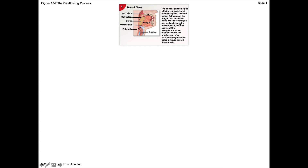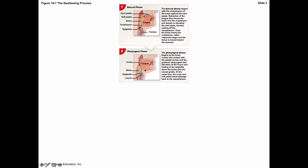At this point, the epiglottis is still elevated and the trachea is still open for air. As we move into the pharyngeal phase, the bolus comes into contact with the palatal arches and the posterior pharyngeal wall. The larynx elevates, causing the epiglottis to fold over and block the passageway into the trachea, preventing the bolus or liquids from entering. Simultaneously, the uvula and soft palate block the passageway back into the nasopharynx.